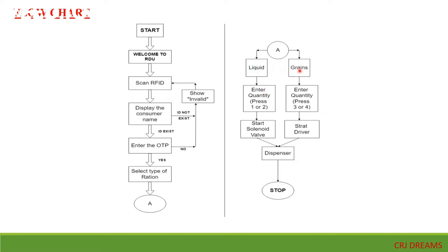After the OTP is verified, the consumer selects the type of ration they want. Two types are available: liquid commodities and grains. To access liquid commodities, the consumer presses one or two on the hex keypad, which opens the solenoid valve so they can collect the required item. To access grains, they press three or four, the motor driver starts, the valve opens, and they can collect the required commodity.